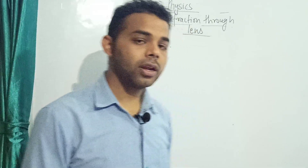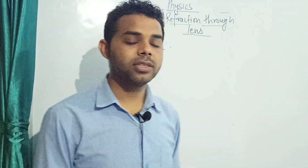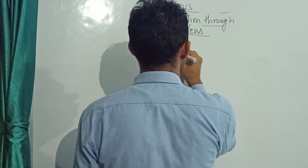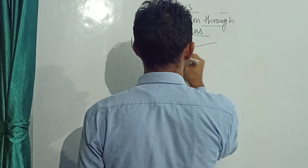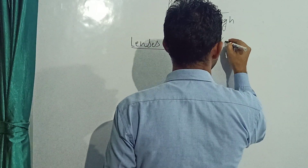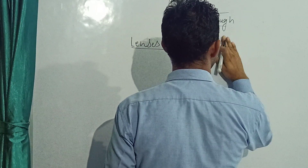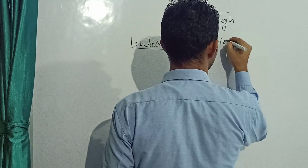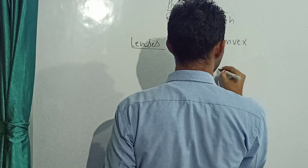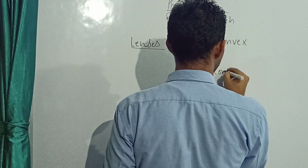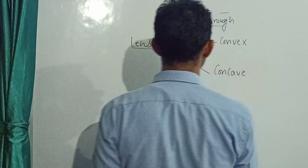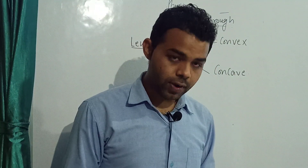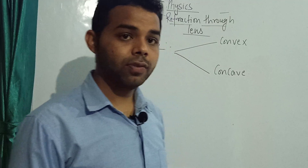So mainly what we have to study? That is concave, convex, and convexo-concave. Those are our two main types of lenses. First of all, we will write the definition of these lenses.